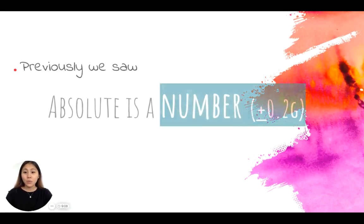Previously we saw that absolute uncertainty is a number. Uncertainties are always represented by a plus or minus sign, and absolute in this case is a number associated with that uncertainty.